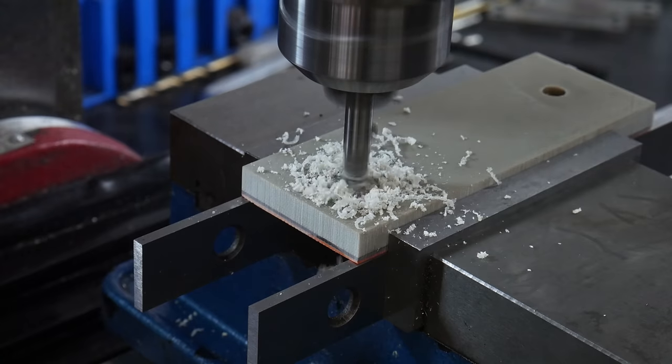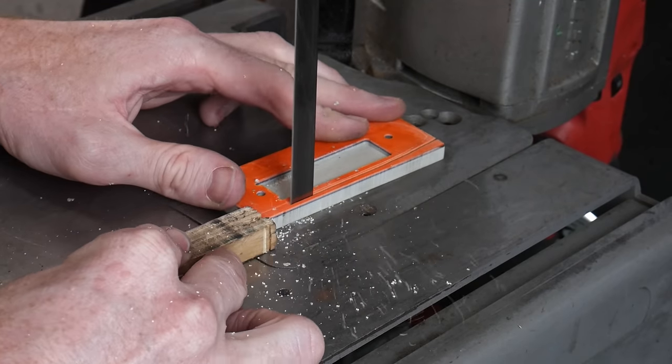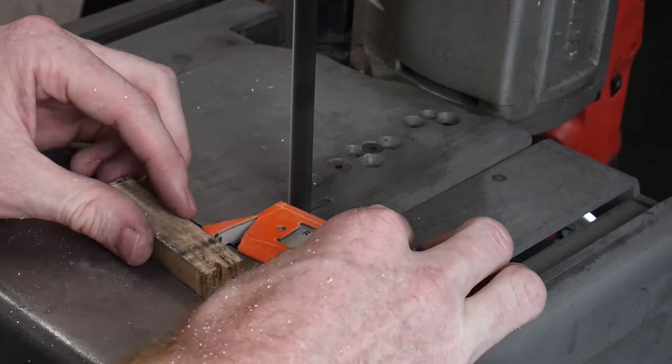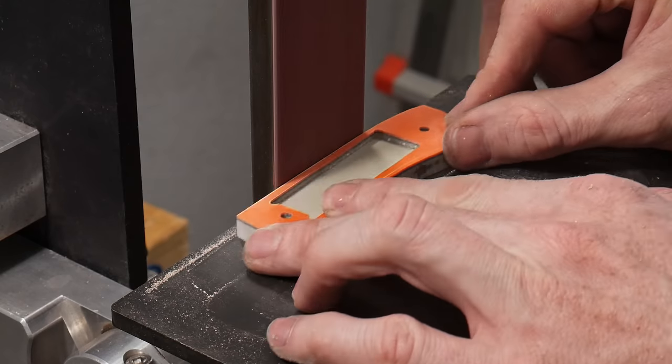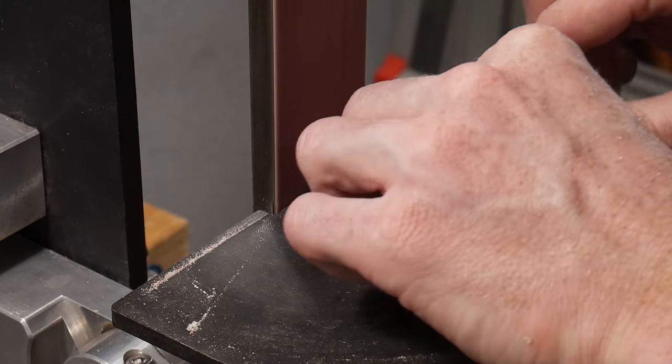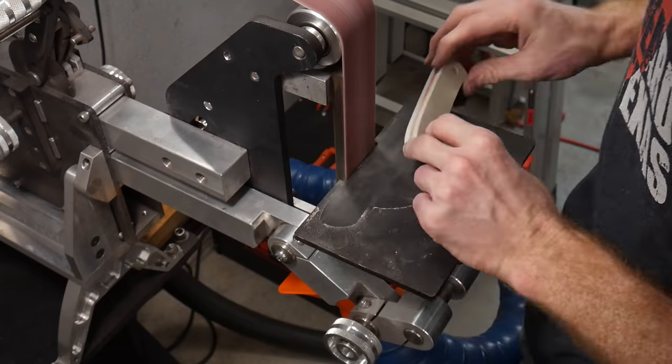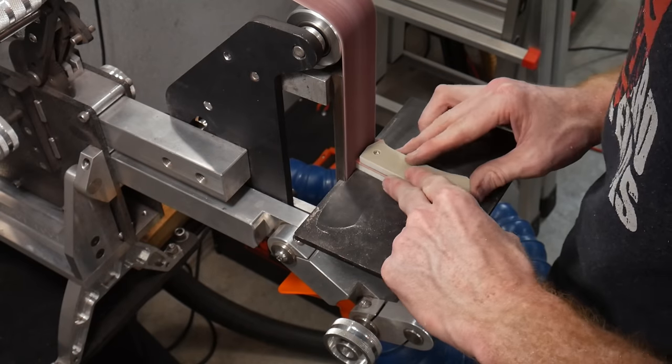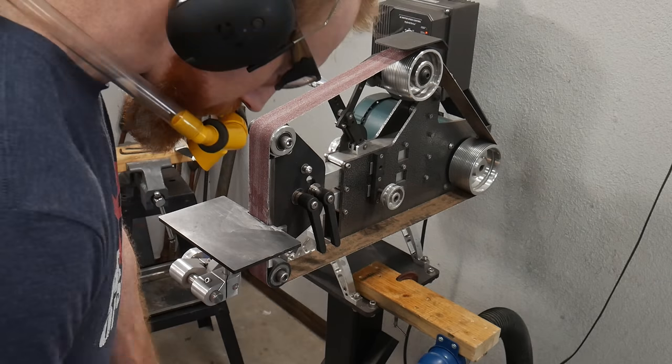Now that the holes are drilled and the pockets are milled, we can roughly profile the handle scales to our scribe lines. Once I have both of the scales roughed in, the advantages of removable handle scale construction begins to become more apparent. I'm able to attach the scales to each other and uniformly grind the front of the scales to match. I then attach the handle scales to the blade and use my grinder in the horizontal orientation to grind the profile of the handle scales down to the metal tang of the knife.